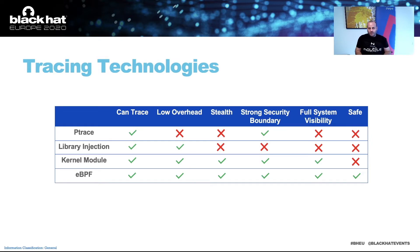Now let's understand why we thought eBPF best suits our needs. There are several tracing technologies in Linux. ptrace is used by strace to trace system calls performed by a process. Library injection is done by tools like Frida, where the injected library is part of the address space of the traced program. With a kernel module, it is easy to hook and trace system calls from within the kernel. And eBPF, a relatively new technology, supports tracing programs that can trace far more than just system calls.